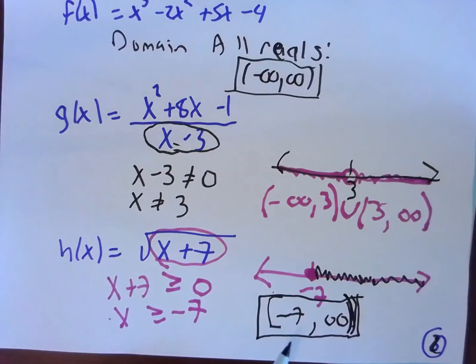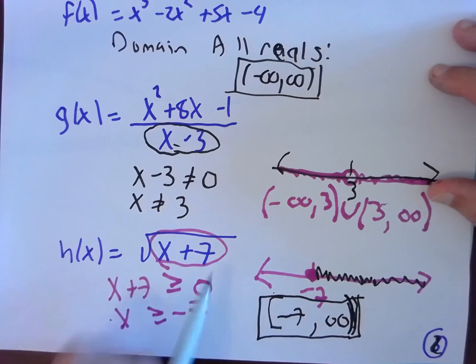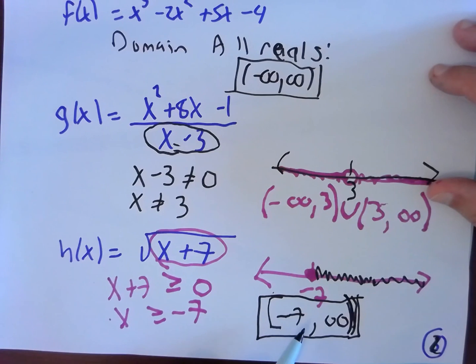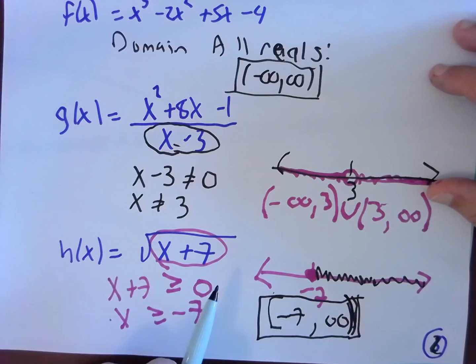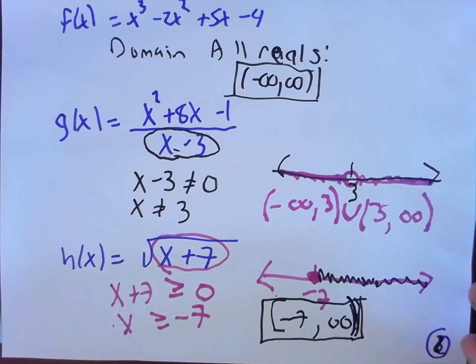Now you might look at that and say, wait a minute. You said you can't take a square root of a negative and you're using negative x's. No, I never said x can't be negative. I said x plus seven can't be negative. Say we did use one of these. Say we used negative five. Negative five plus seven is positive two. I can do square root of positive two. So this is the domain. X values greater than or equal to negative seven.